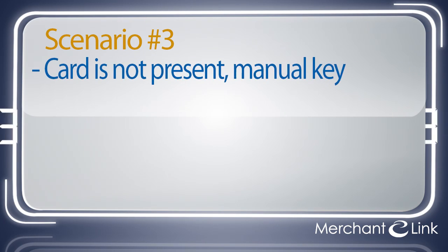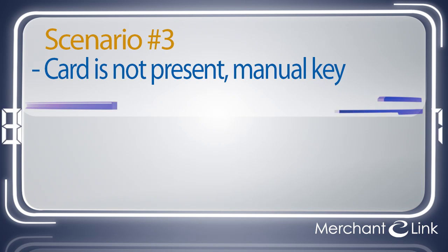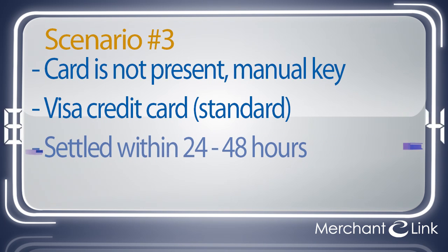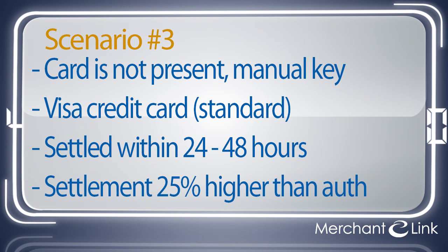In our next scenario, the merchant processes a Visa card transaction with the following acceptance variables: the card is not present, so the merchant manually keys in the card number; the card accepted is a standard Visa credit transaction; and the merchant settles the transaction within 24 hours, but the final sale amount is 25% more than the authorized amount. What kind of weather can we expect on this interchange report? In this case, I'm afraid we're in for some bad weather — maybe even a blizzard or a tornado.